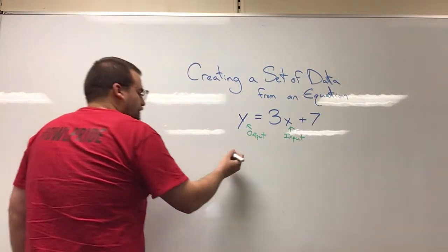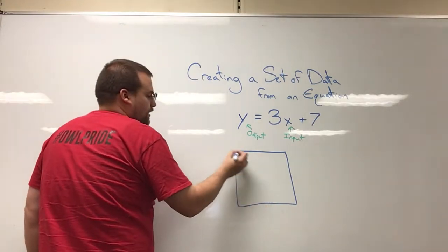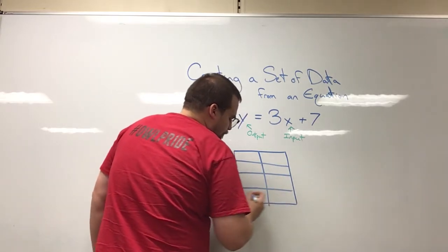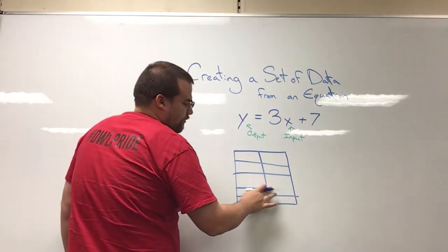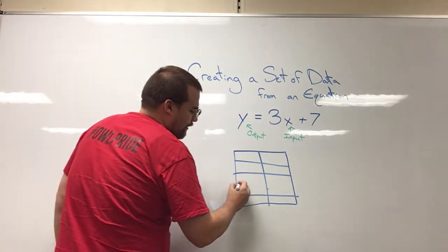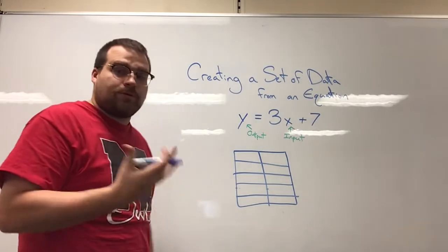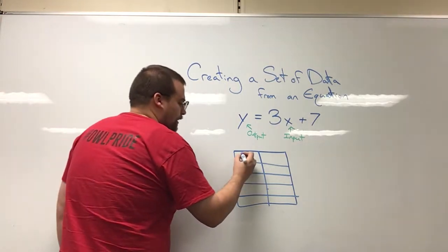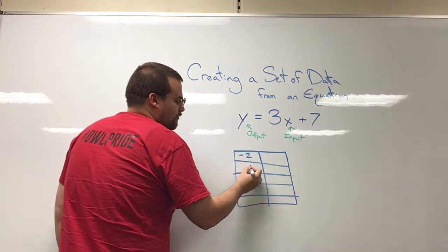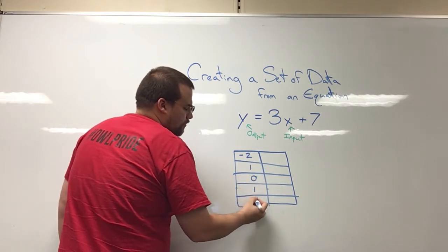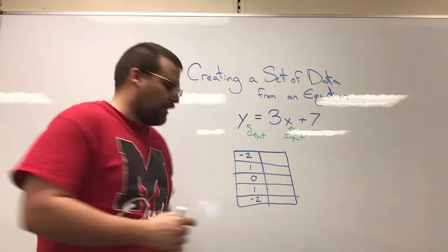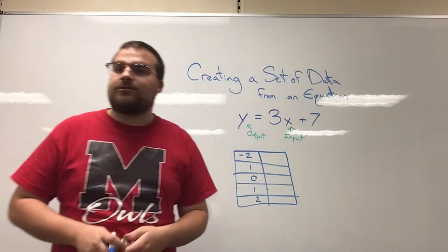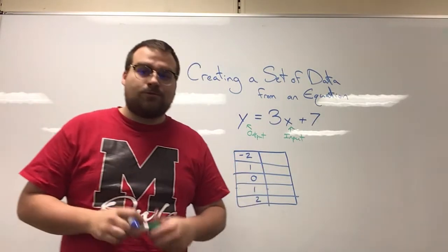Sometimes you have specific x values you need to choose — whether questions require that or a teacher is requiring it. But if I'm personally just trying something out, or trying to do this for the purposes of graphing a line, then I like to choose a couple negative values, a couple positive values, and a 0. So: negative 2, negative 1, 0, 1, and positive 2. It can be anything, though — you could be doing numbers in the millions, crazy negative numbers, anything.